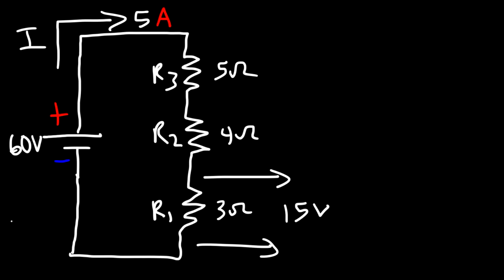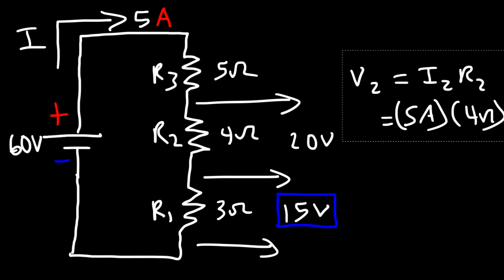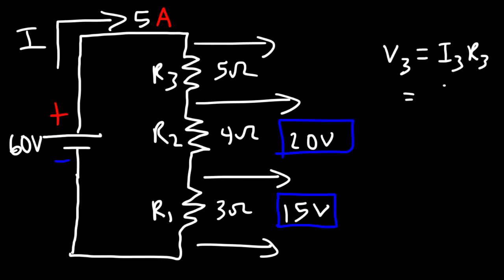Now what about across R2? We follow the same pattern: V2 is equal to I2 times R2. The current is still 5 amps, but the resistance is 4 ohms. So 5 times 4 gives us 20 volts across R2. Now across R3, V3 is equal to I3 times R3. I3 is still 5 amps and R3 is 5, so 5 times 5 is 25 volts across R3.